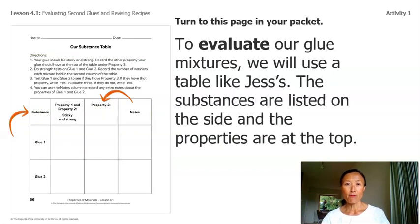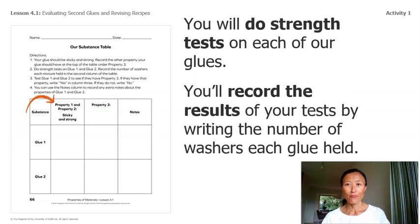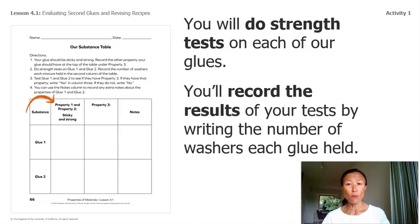Turn to this page in your packet — it should say 'Our Substance Table.' To evaluate our glue mixtures, we will use a table like Jess. The substances are listed on the side and the properties are at the top. You will do strength tests on each of our glues and then record the results by writing the number of washers each glue held. Remember to test each of your mixtures in the same way so that the tests are fair. In addition to testing our glues for stickiness and strength, we need to determine whether our glues had the third property we chose.